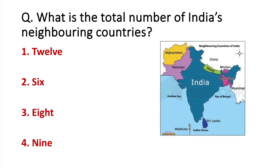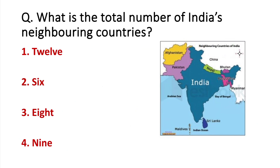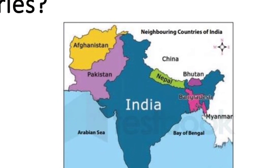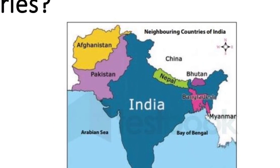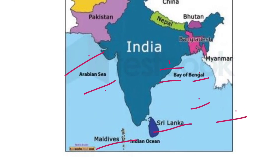What is the total number of India's neighboring countries? India has a total of nine neighboring countries — seven share land borders and two share water borders. So the total is nine.